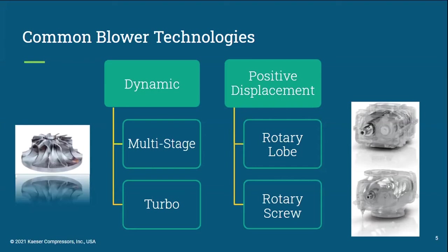Positive displacement blowers include your typical rotary lobe and rotary screw blowers. Rotary lobe blowers are also an older but proven technology that has been the heart of countless wastewater treatment plants around the world. Rotary screw technology is similar to turbo blower technology in that it is a relatively newer technology when compared to rotary lobe and multi-stage blowers. Now let's get into further detail about what makes these blower technologies different from each other and where they are best utilized.